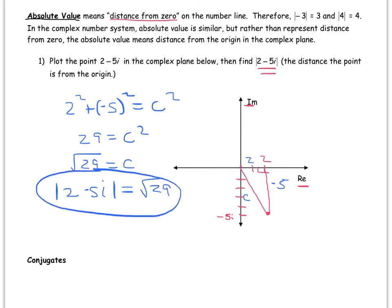A quick note about conjugates. If I take 2 minus 5i, then its conjugate would be 2 plus 5i. So what's the importance of conjugates? Well, watch what happens when you multiply a complex number and its conjugate together.